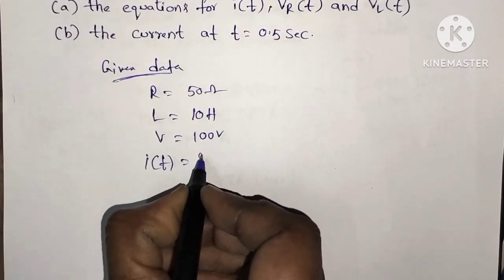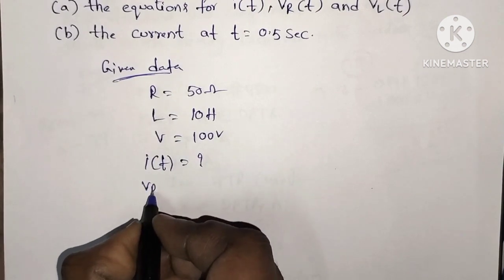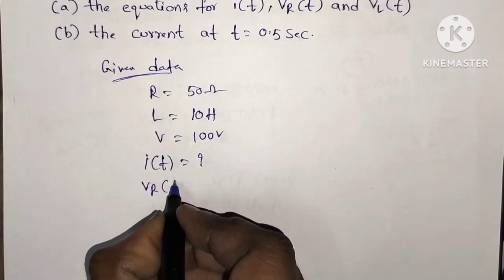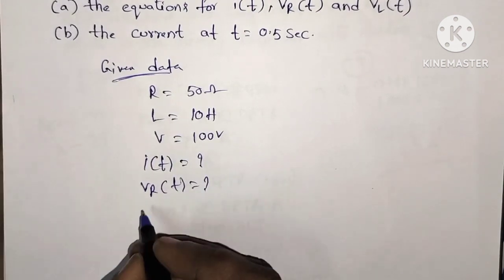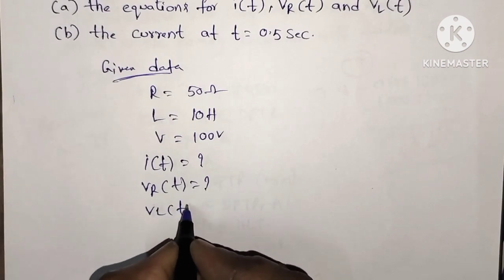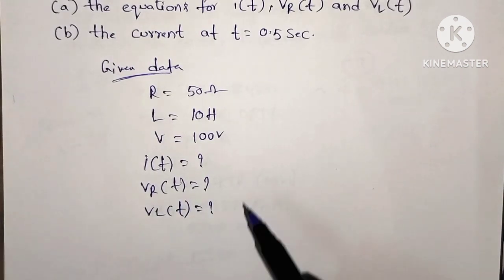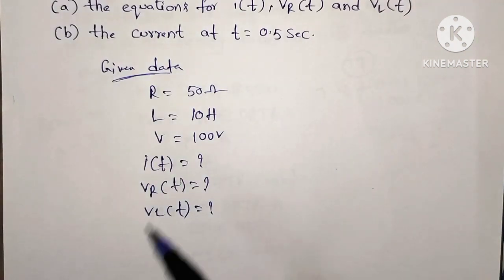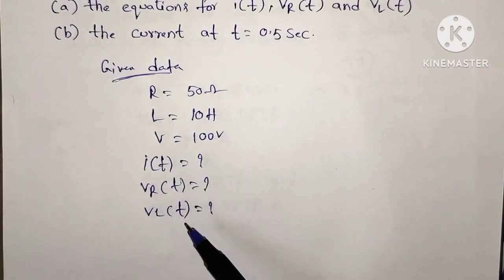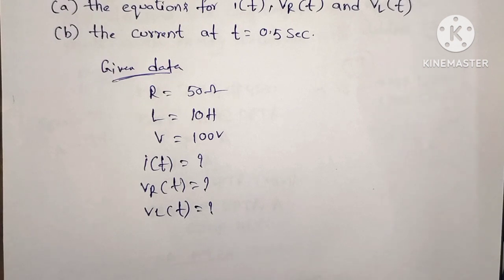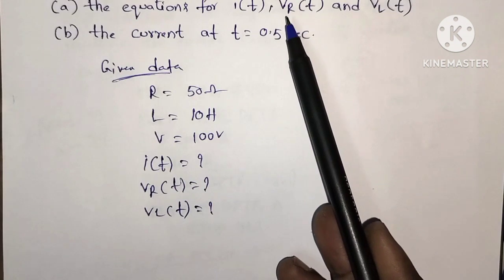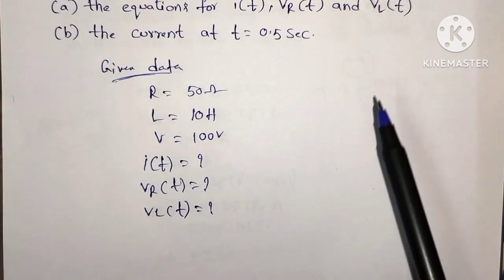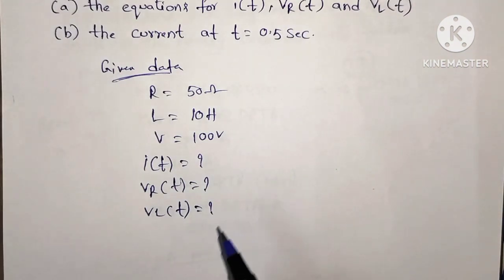I of t equals question mark. We also need to find the voltage across the inductor, resistor, and the current at t equal to 0.5 seconds. First, from the DC response of series RL circuit derivation, we get the equation for I of t, Vr of t, and Vl of t.